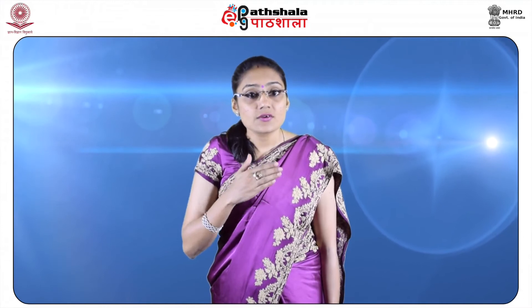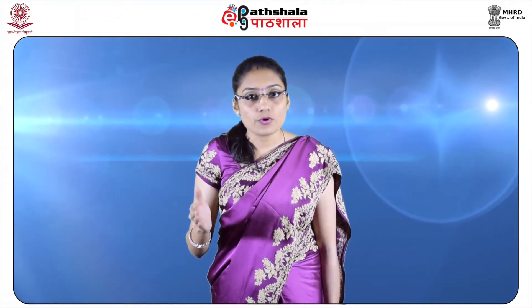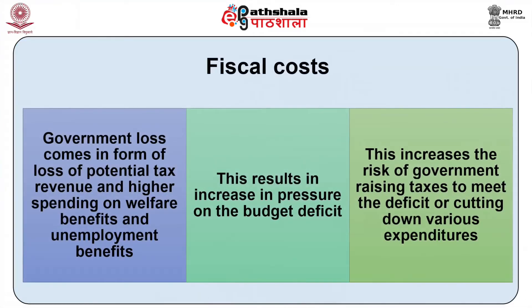When unemployment is high, there will be an increase in spare capacity. In other words, the output gap will become negative, which can have deflationary forces on prices, profits and outputs. Seventh, fiscal cost. Government loss comes in the form of loss of potential tax revenue and higher spending on welfare and unemployment benefits. This results in increased pressure on the budget deficit, raising the risk of the government increasing taxes or cutting expenditures.